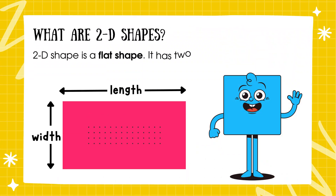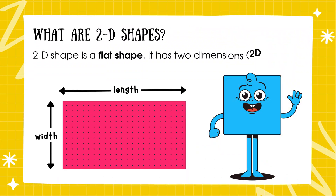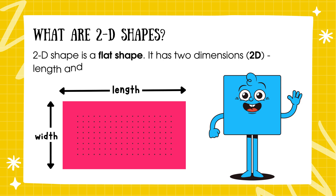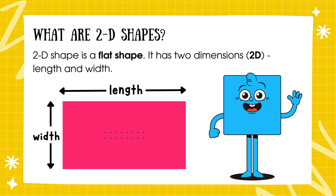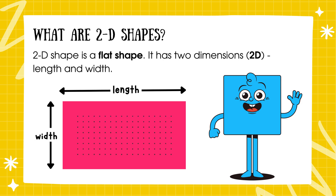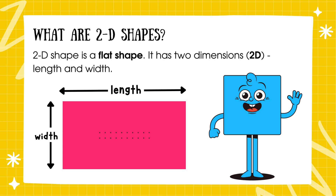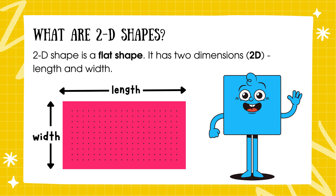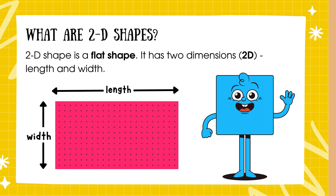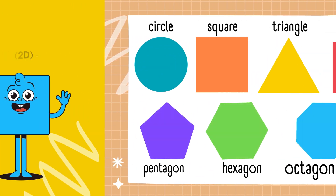A 2D shape is a flat shape. It has two dimensions: length and width. That's why it's called 2D, or two-dimensional.